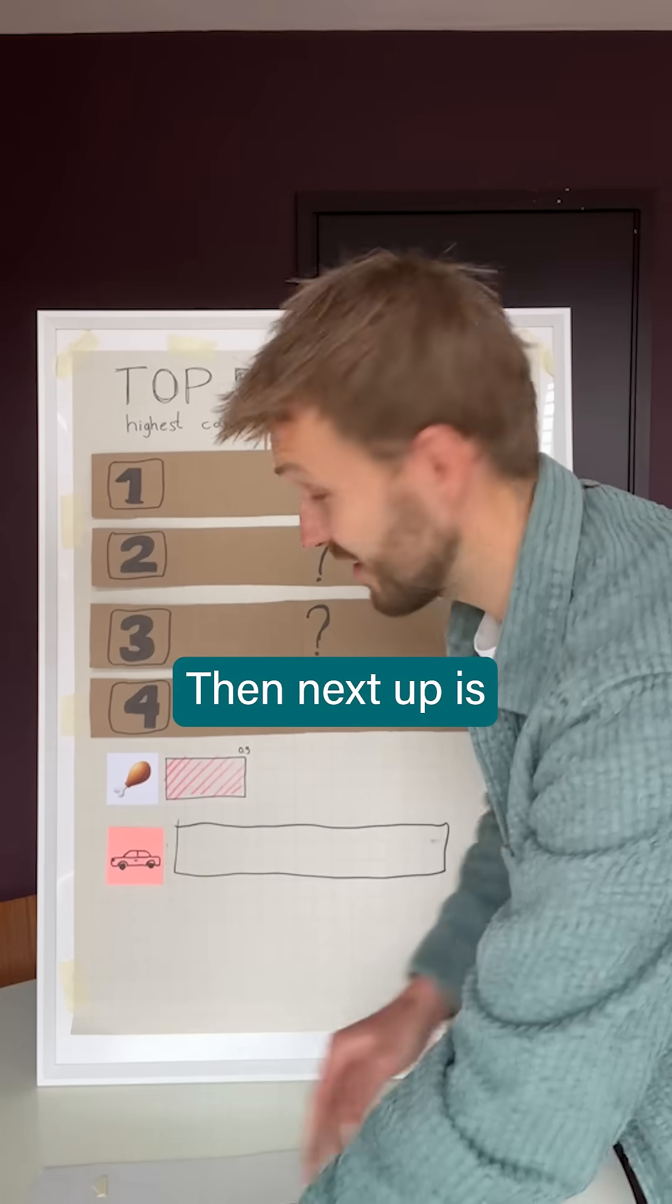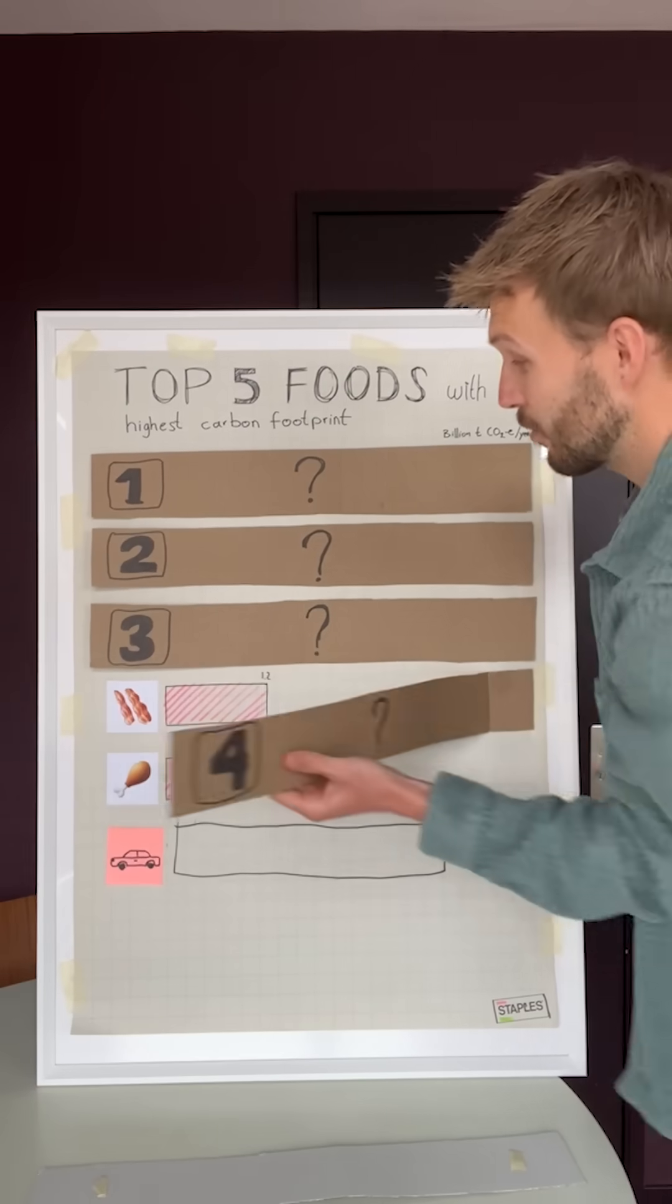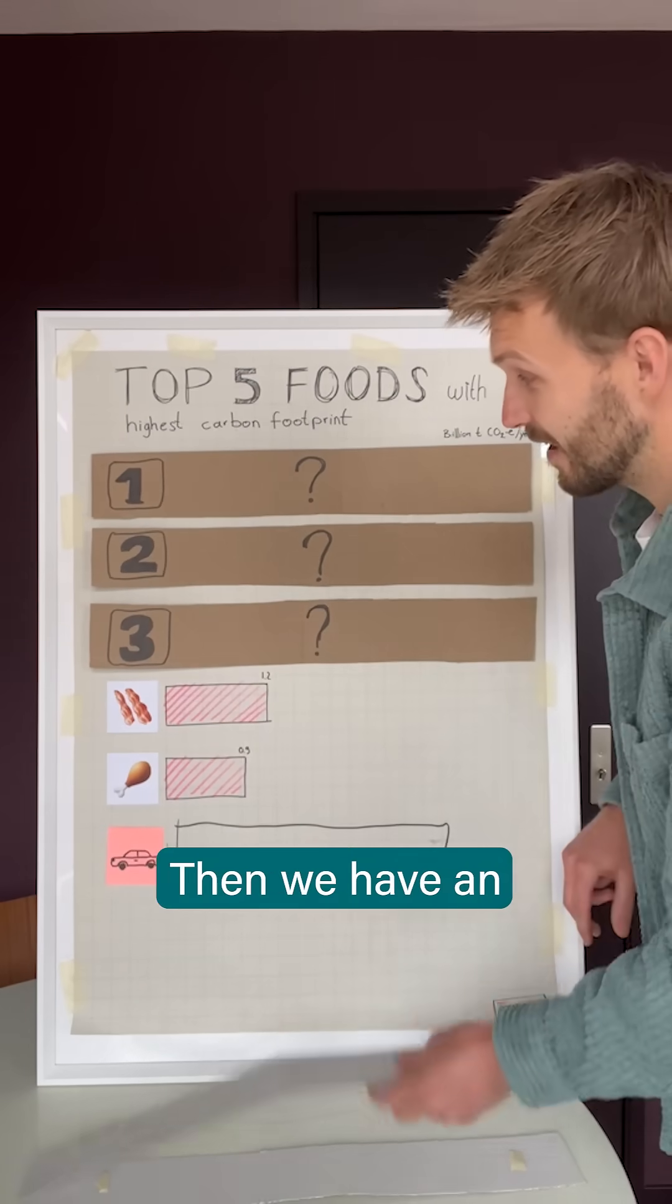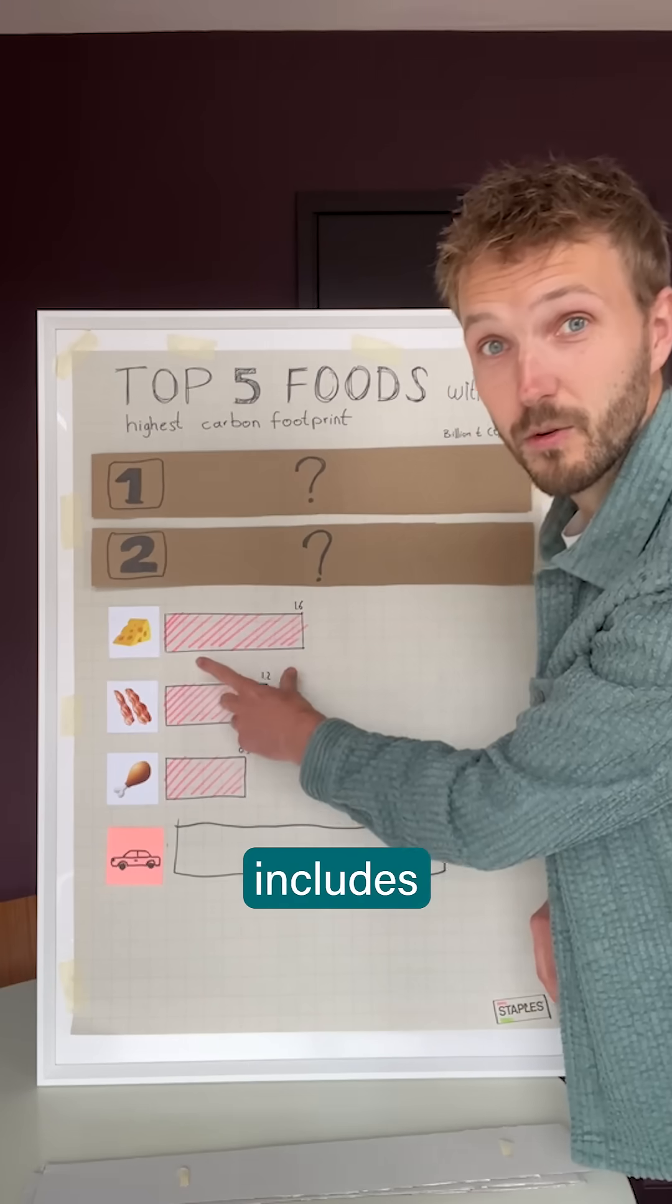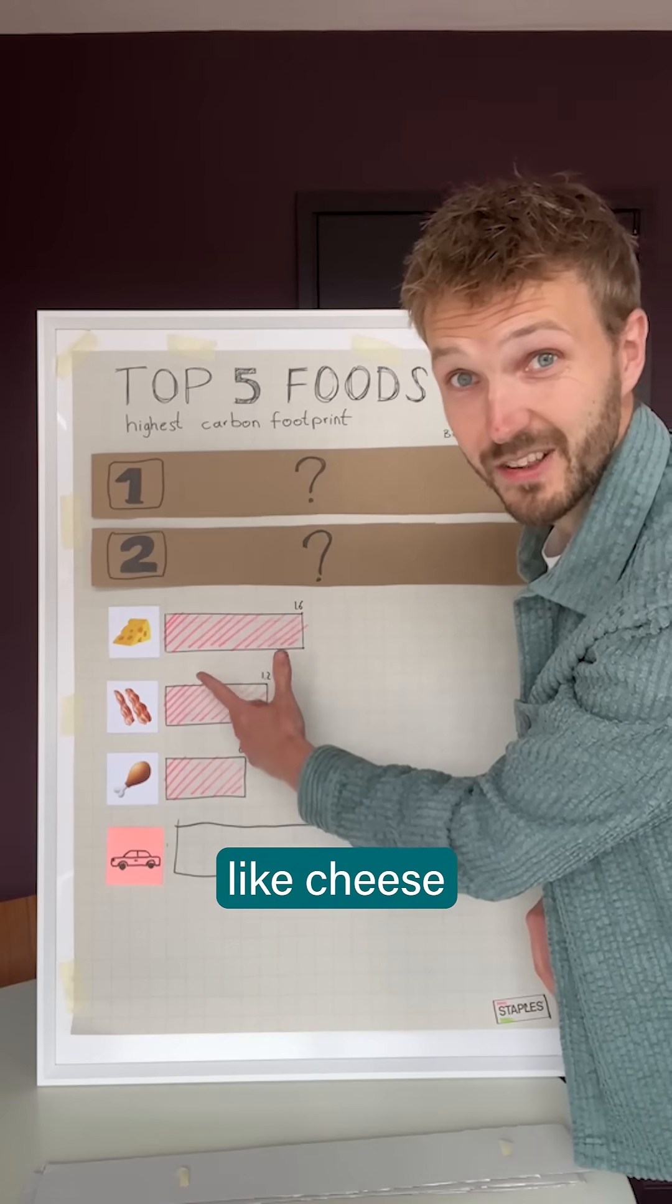Then next up is pork. Then we have an interesting one: milk. This also includes all the milk products like cheese and butter.